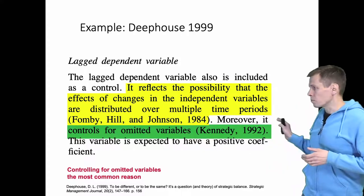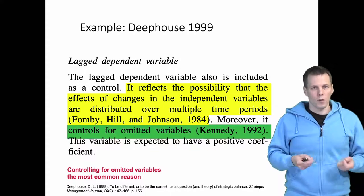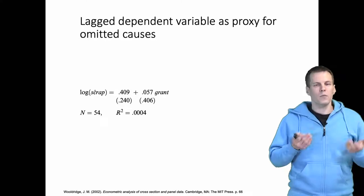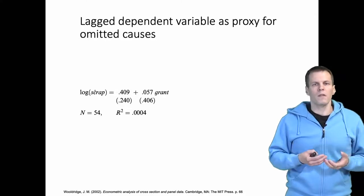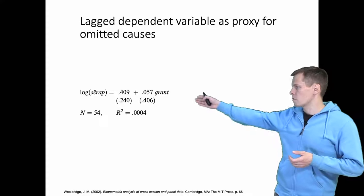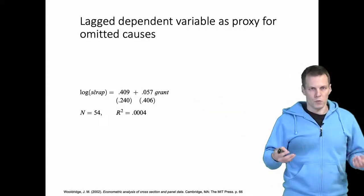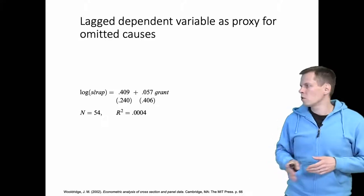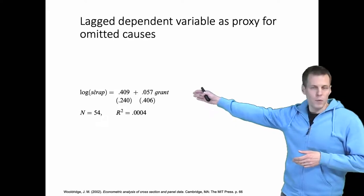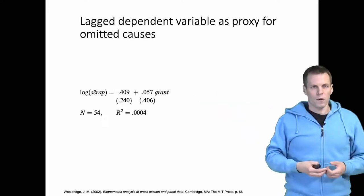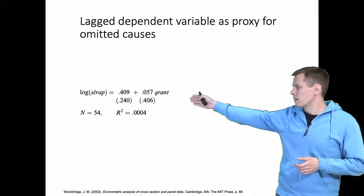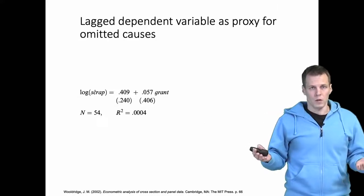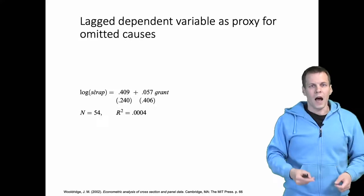Let's look at how a lag dependent variable can proxy omitted variables. This example comes from Woolridge (2002). The dependent variable is log of scrap — the amount of scrap a firm produces. Some firms receive a grant for reducing scrap, others don't. When we regress scrap on grant, we find that the effect of grant on log of scrap is positive, meaning those companies that got the grant appear to have more scrap.